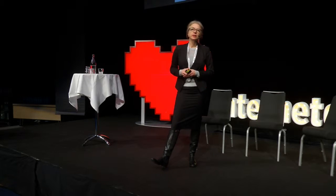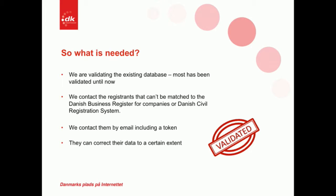To ensure data quality, we're validating the existing database, which has many years of data — some records don't even have an email address. We ran a match against the Danish business register for company registrants, and against the Danish civil registration system. However, many registrants couldn't be matched because a differently spelled number or address will not produce a match. We've tried to make the system not too sensitive, but it has to closely resemble what's listed in either register.